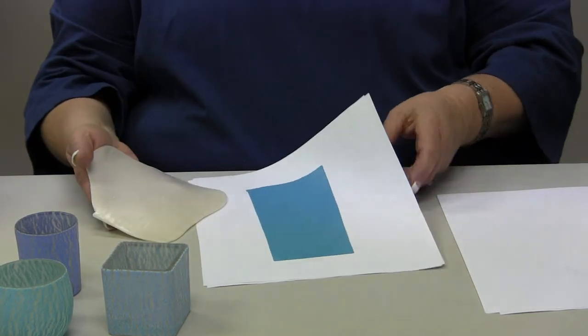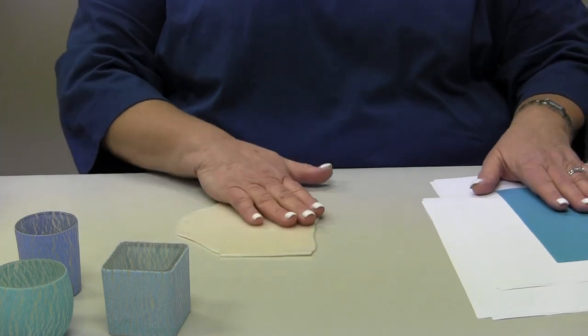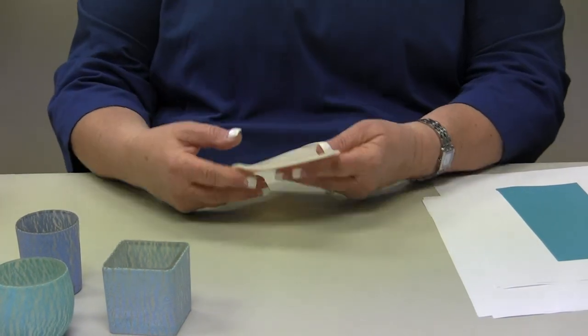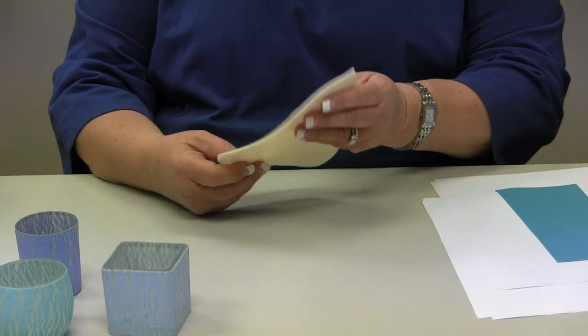Then I roll out a sheet of regular translucent clay. The translucent I have rolled out on about a number one.